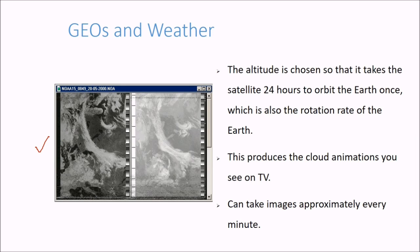GEOs and weather. The altitude is chosen so that it takes the satellite 24 hours to orbit the earth once, which is also the rotation rate of the earth as we discussed earlier. This produces the cloud animations you see on TV. These can take images approximately every minute.